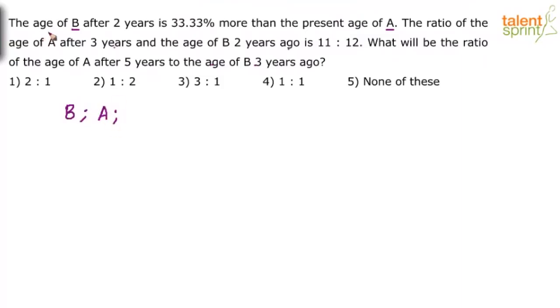So let us assume that the present age of B is B and the present age of A is A. Now it says the age of B after 2 years. What is age of B after 2 years? B plus 2 is equal to 33.33% more than the present age of A. The 33.33% more than the present age of A means what? A plus 33.33% of A.